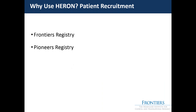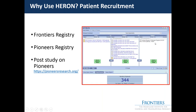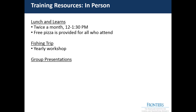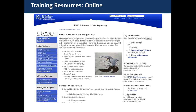Researchers can also recruit through registries. We have the Frontiers Registry — patients seen at KU who have agreed to be contacted for research — allowing researchers to contact them directly without going to their treating provider. We also have the Pioneers Registry, a national registry hosted at KU. Patients can sign up for studies they're interested in participating in. For training resources at KU, we offer twice-monthly Lunch-and-Learns with free pizza, a yearly event, and group department training.